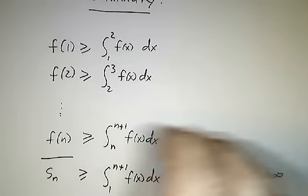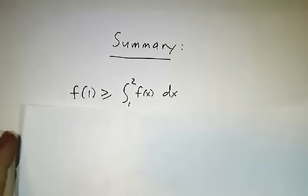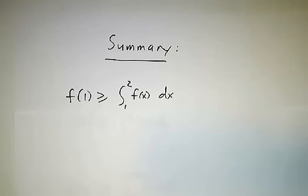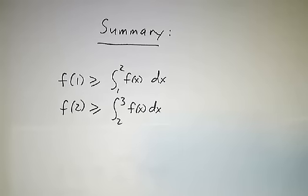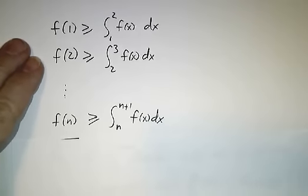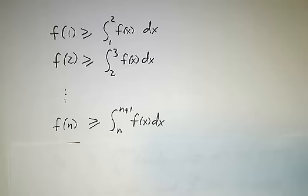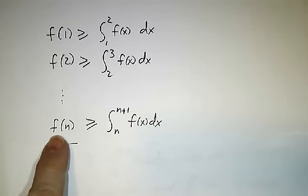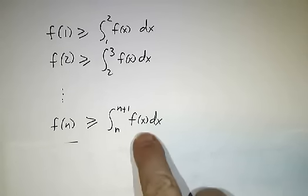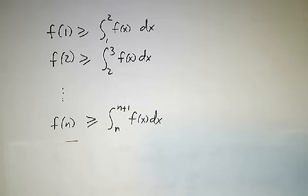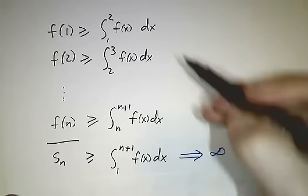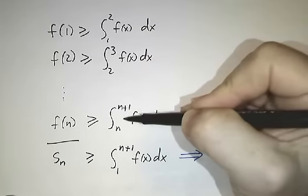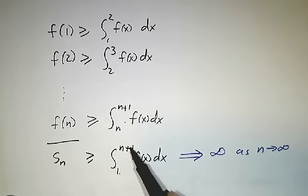To sum up: f of 1 is at least as big as the integral from 1 to 2, f of 2 is at least as big as the integral from 2 to 3, and in general, f of n is at least as big as the integral from n to n+1, because f(n) is the area of a rectangle and the integral is the area under the curve beneath that rectangle. Adding these together, we get that S_n — the sum of the first n terms — is at least as big as the integral from 1 to 2 plus the integral from 2 to 3, all the way to n to n+1, which equals the integral from 1 to n+1.